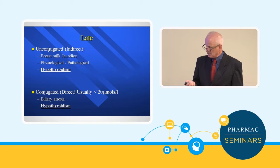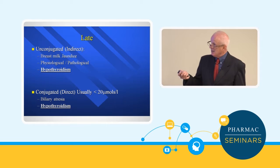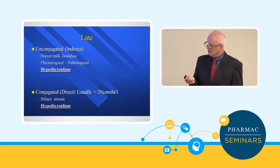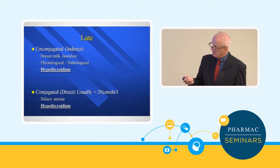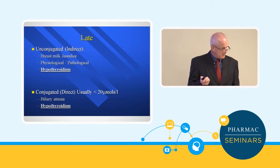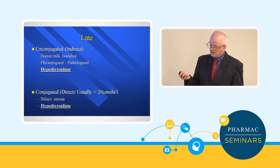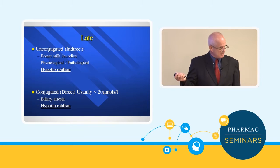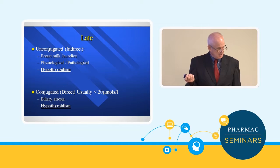In terms of other forms of jaundice, late jaundice can be unconjugated — not combined with the glucose molecule — and can be due to breast milk jaundice. For both late unconjugated and conjugated jaundice, hypothyroidism is a consideration. If you've got persisting jaundice and the baby is especially lethargic, don't take your eye off the ball — hypothyroidism needs to be considered.